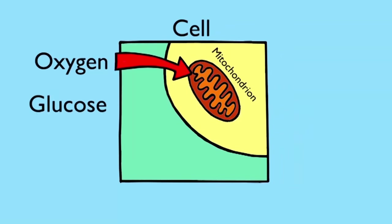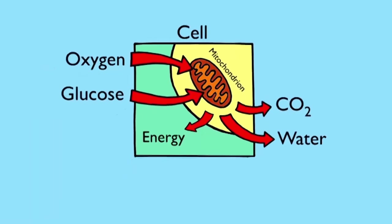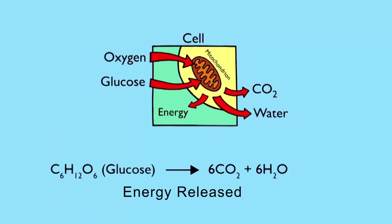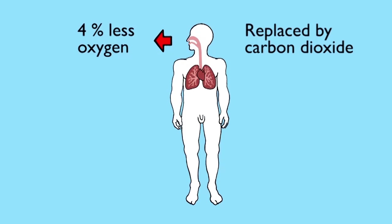Oxygen combines with glucose, building up carbon dioxide and water and releasing energy. This enables cells to function and our bodies to survive. As you breathe out, air now contains roughly 4% less oxygen than when you breathed in. This has been replaced by another gas called carbon dioxide.